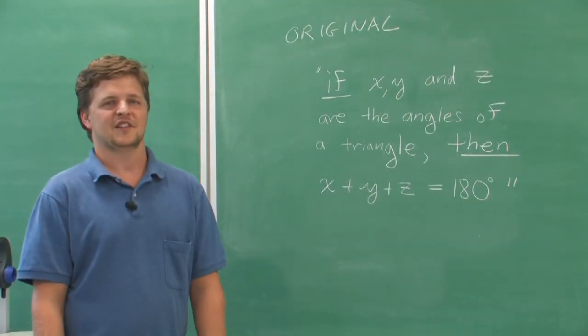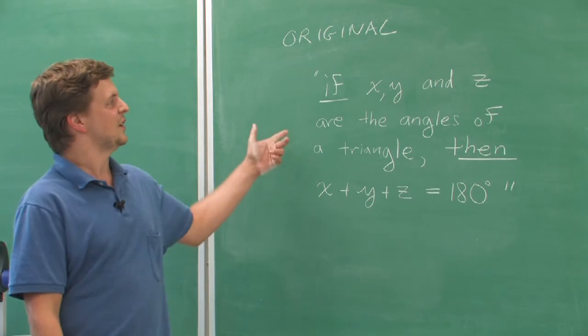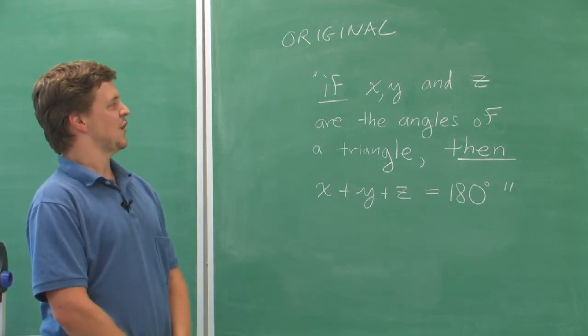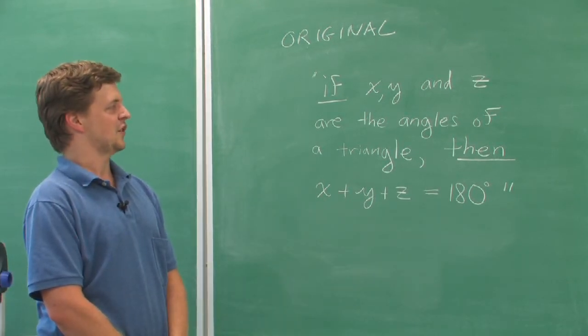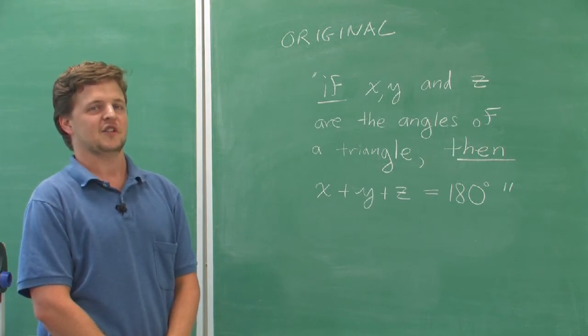There are several alternatives to proving the original statement. Here's an original statement. If x, y, and z are the angles of a triangle, then x plus y plus z equals 180 degrees.